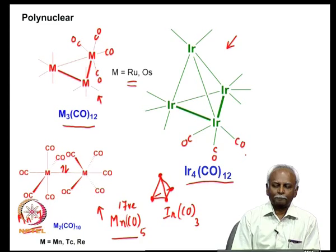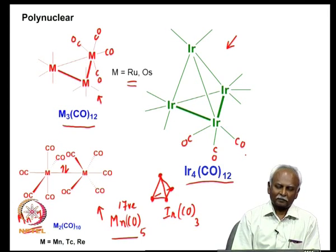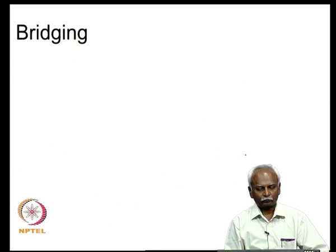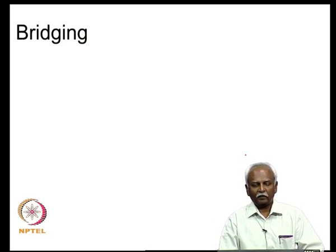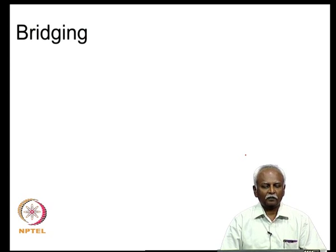This brings us back to what we discussed earlier: these metal complexes are significantly driven by the tendency to form 18-electron species — the total valence electron count must be 18. Another aspect of polynuclear systems is the fact that you can have bridging carbon monoxides.